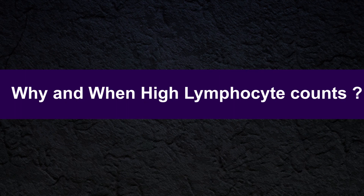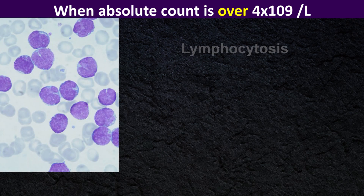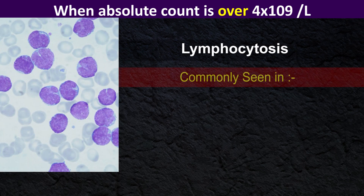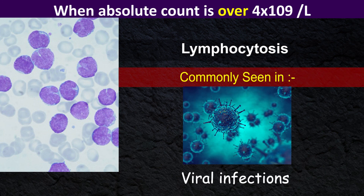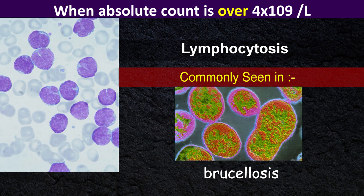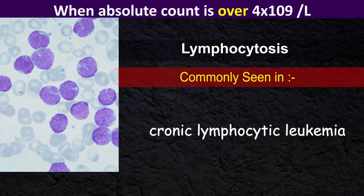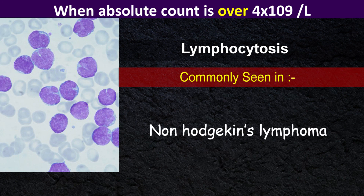When the absolute count is over 4 × 10⁹ per liter, it is called lymphocytosis. This is commonly seen in certain infections such as viral infections, infectious mononucleosis, brucellosis, and tuberculosis. High lymphocyte count can also be seen in chronic lymphocytic leukemia and non-Hodgkin's lymphoma.